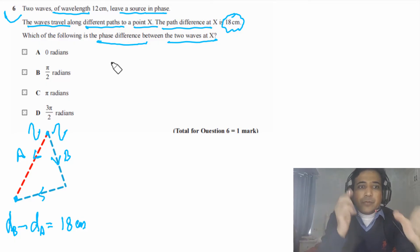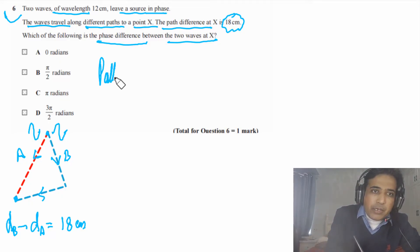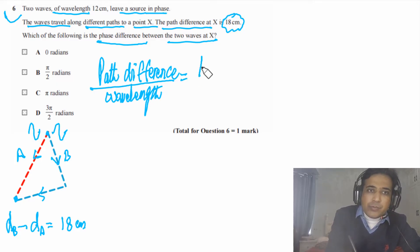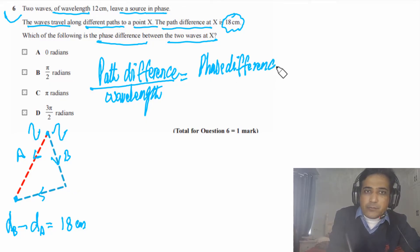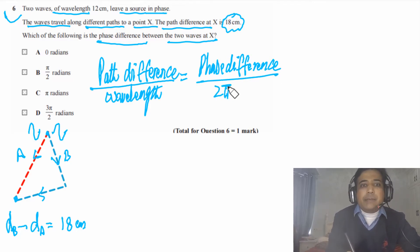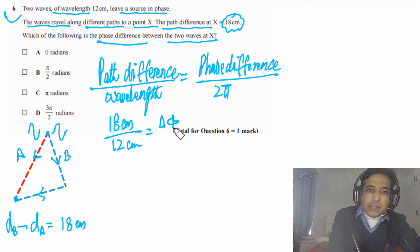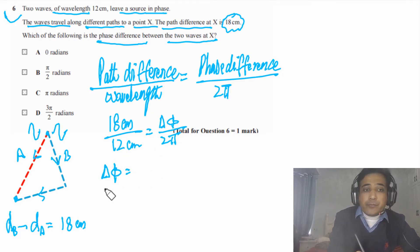To relate path difference to phase difference, we use: path difference divided by wavelength equals phase difference divided by 2π. This represents one complete cycle. We have path difference = 18 centimeters and wavelength = 12 centimeters. Substituting: 18/12 = Δφ / 2π, so we can solve for Δφ, the phase difference.